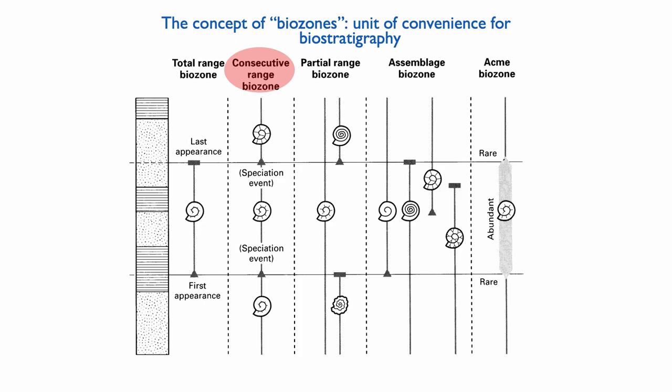You can also use consecutive range biozone. Imagine that you have a species that evolves. So you start with a certain form of a species, then you have a speciation event where the species changes and then a second speciation event where it changes again. And you can use those different consecutive events to define the biozone.